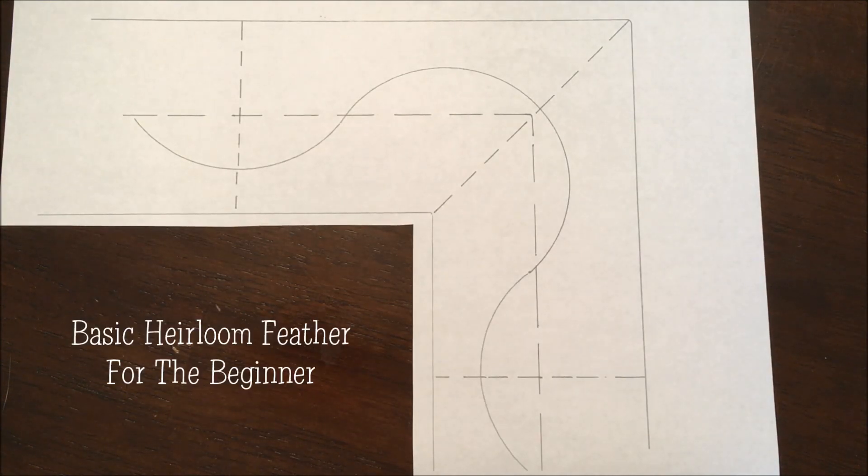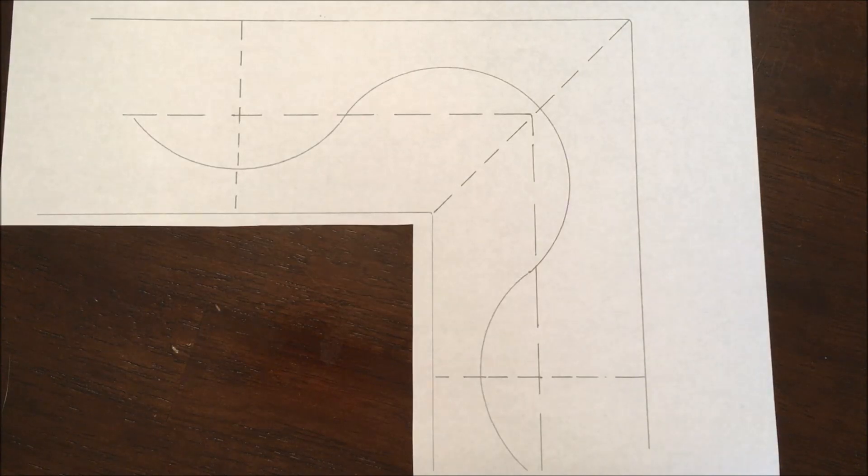Today what we're going to learn is a basic heirloom feather that's done for beginners. I say this because it has a special little bump on it that allows us to reduce the amount of backtracking.